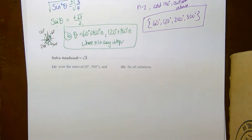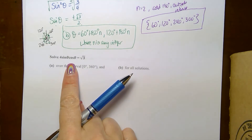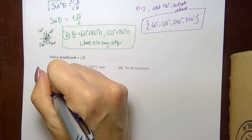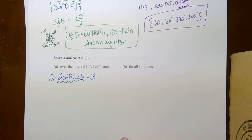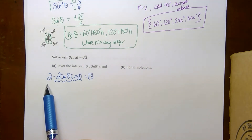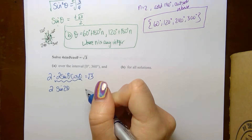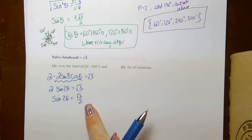The next problem has 4 sine θ cosine θ. This looks like a double angle identity. Since 2 sine θ cosine θ is the sine double angle identity, 4 sine θ cosine θ equals 2 times 2 sine θ cosine θ, which equals 2 sine 2θ. Setting 2 sine 2θ equals square root 3 gives sine of 2θ equals square root 3 over 2 — a unit circle value.